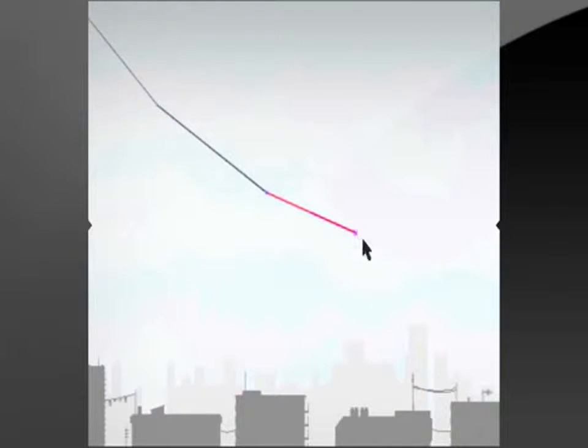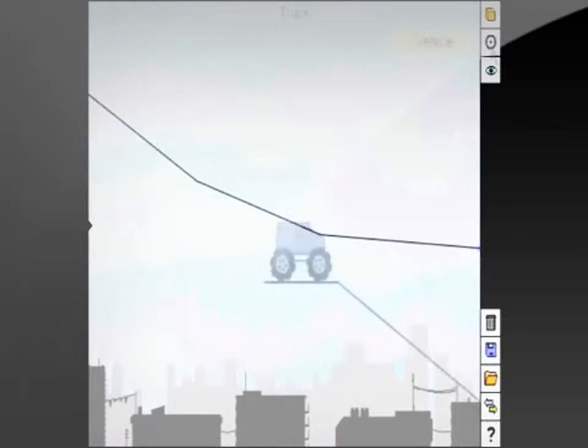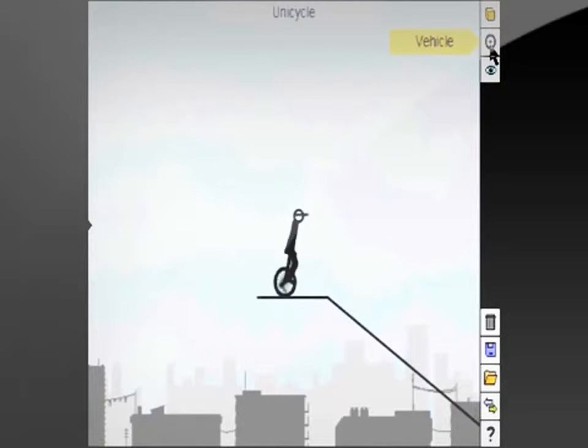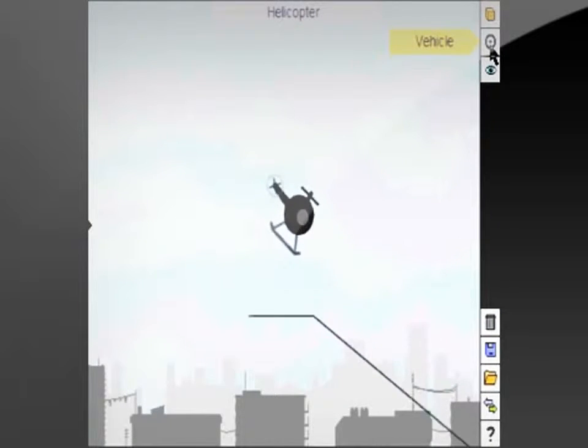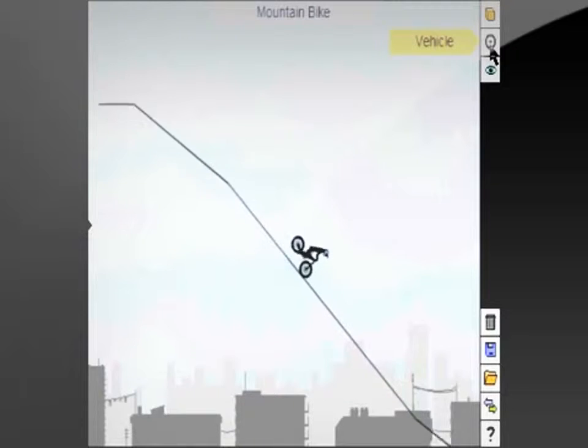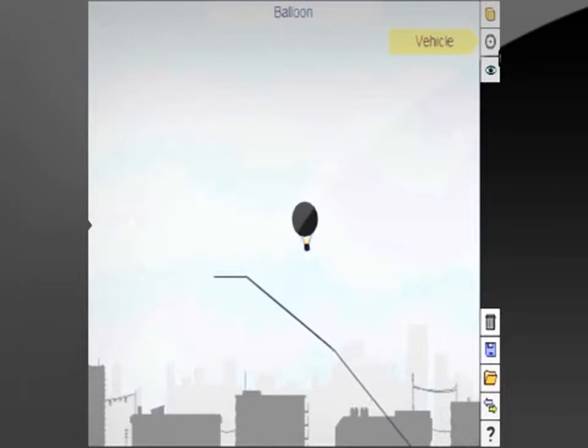The summary of this game is you make a track and then you try to do tricks on it using different vehicles just like Line Rider. Except you have a mountain bike, a truck, a unicycle, a helicopter, a BMX bike, a blob, and an air balloon.